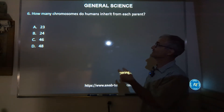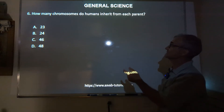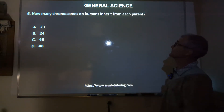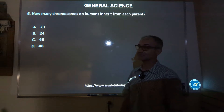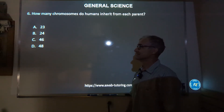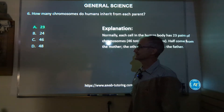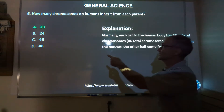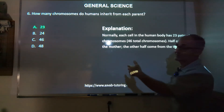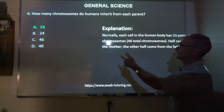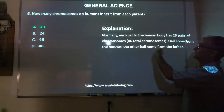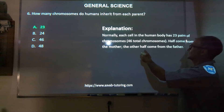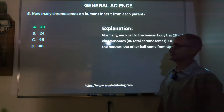Number six: how many chromosomes do humans inherit from each parent? This is just one of those numbers you have to know from a genetics class. Correct answer is A, 23. Maybe you've heard of 23andMe — that's where it's from. Each cell in the human body has 23 pairs of chromosomes, 46 total. Half come from the mom, the other half come from the father.